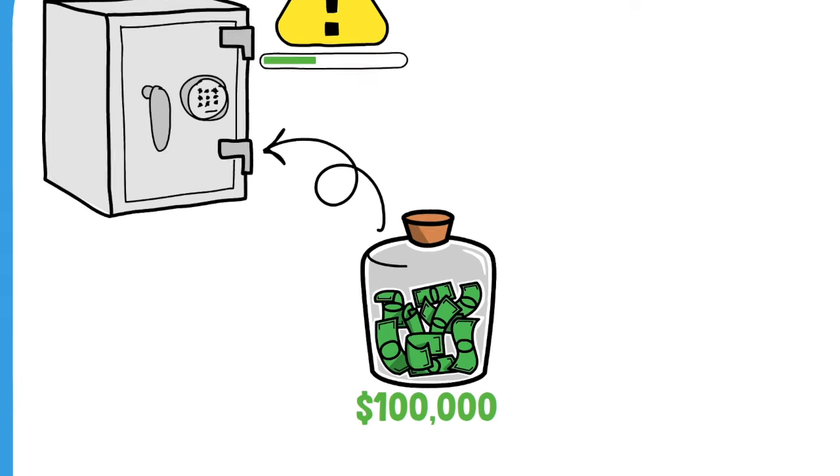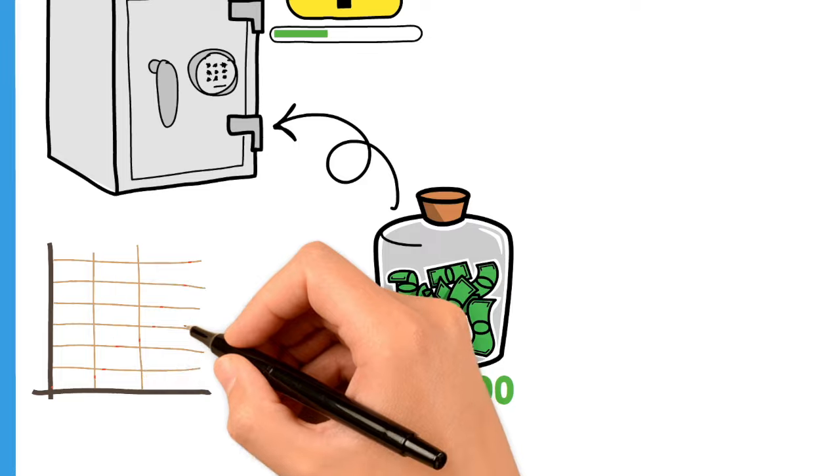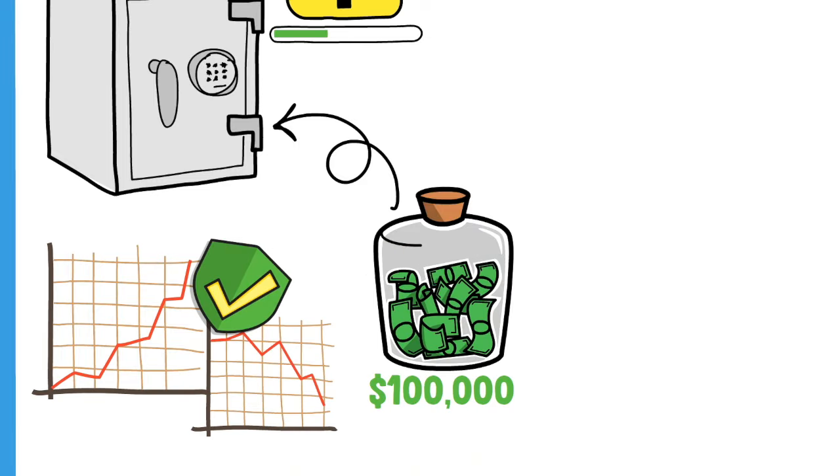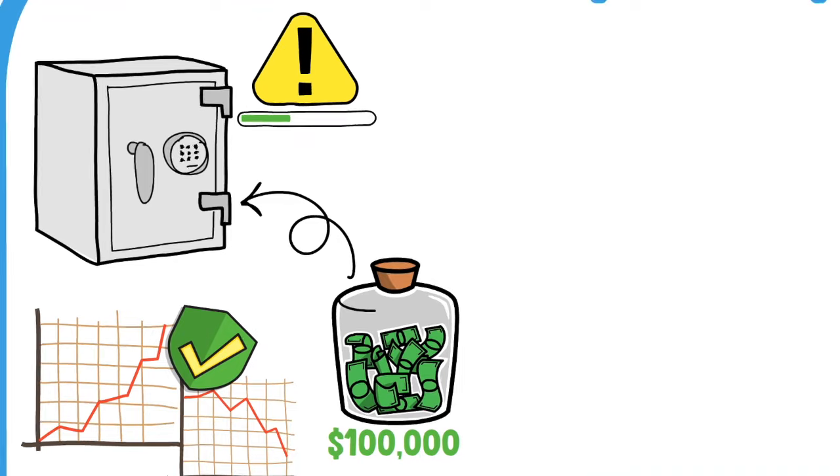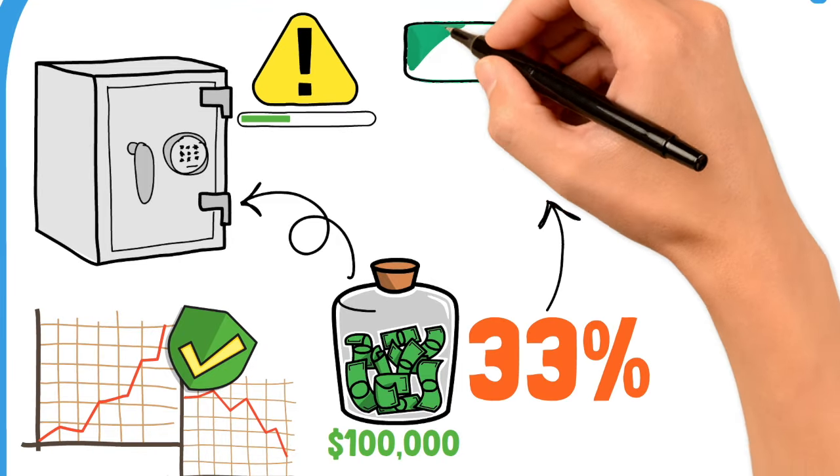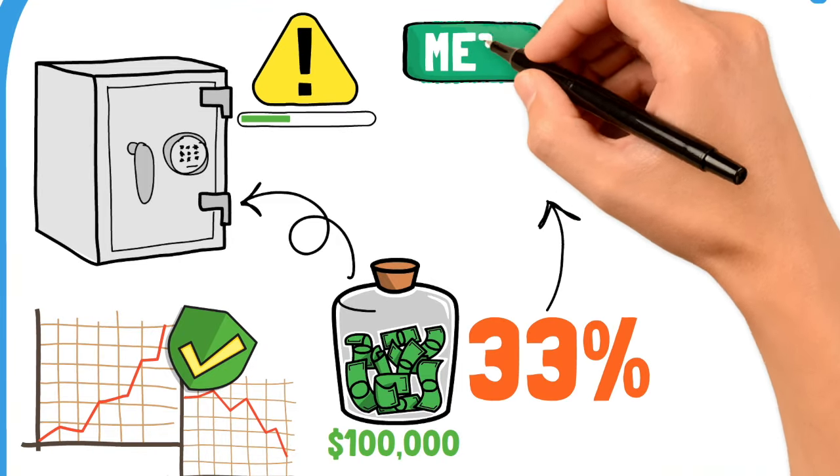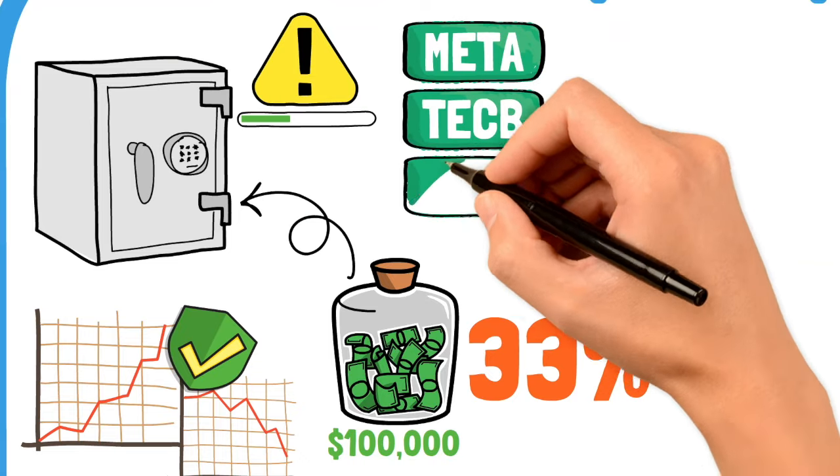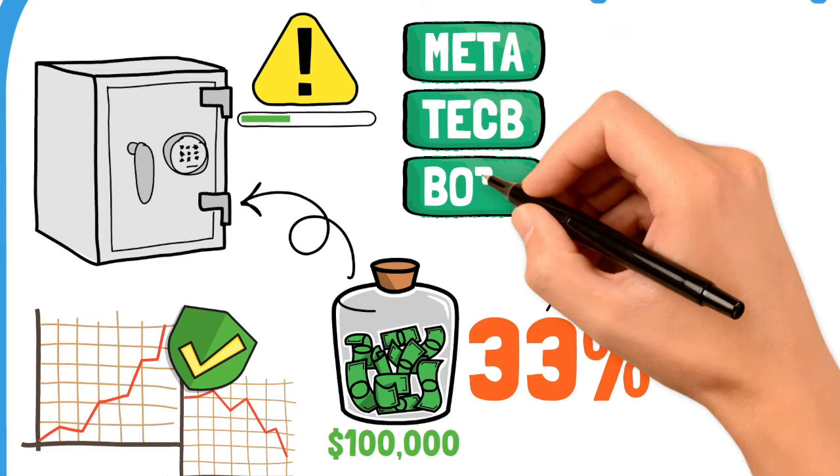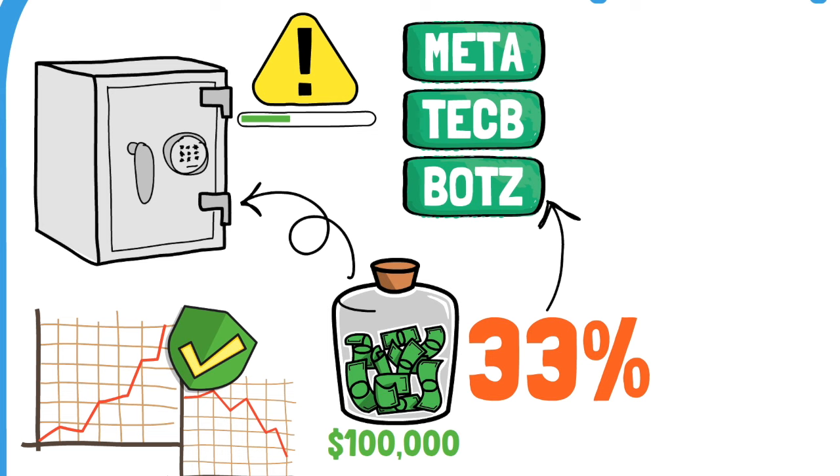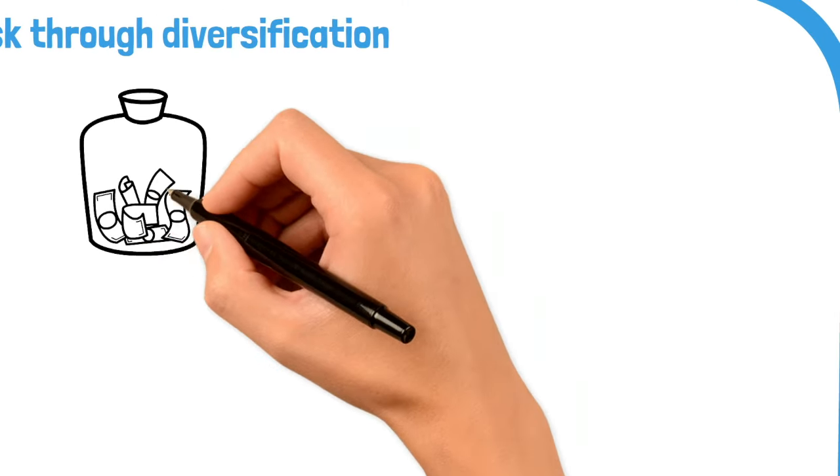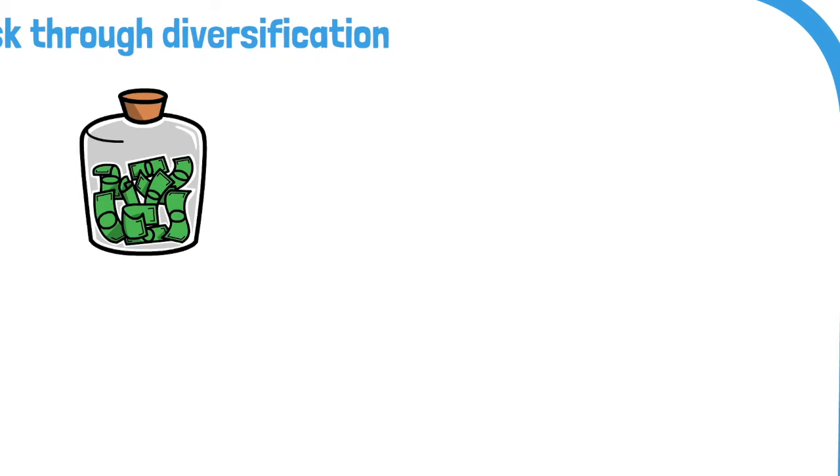By spreading your investment across different sectors and companies, you can protect your portfolio from market volatility. Here's how to do it effectively. To diversify, allocate 33% of your $100,000 investment into each of the top three AI ETFs: META, TECB, and BOTZ. This balanced distribution ensures that you tap into the unique strengths of each ETF while minimizing risk.